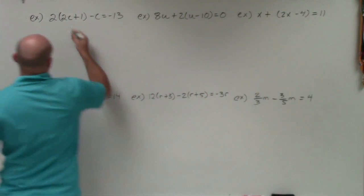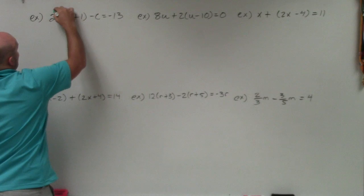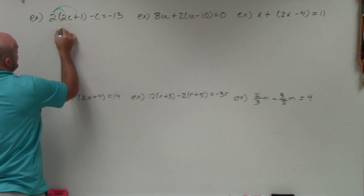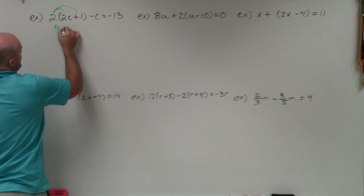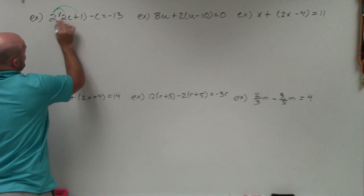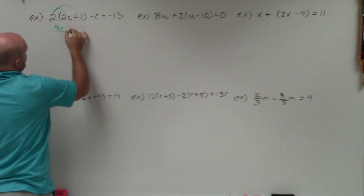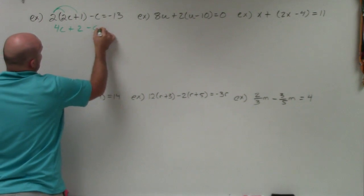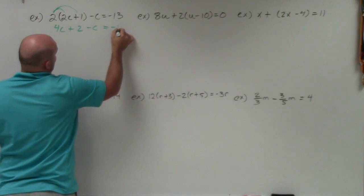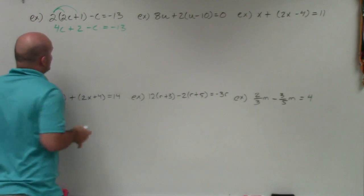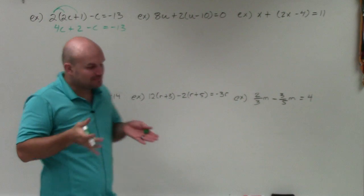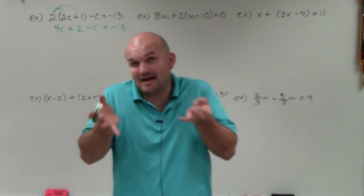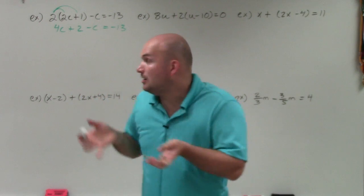By taking the 2 and multiplying it by 2c and by 1: 2 times 2c gives you 4c, 2 times 1 is a positive 2, then minus c equals negative 13. Now I have an equation where I have the same variable but two of them.